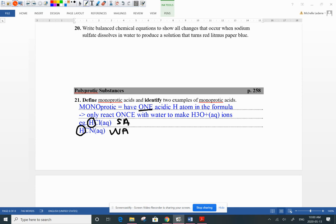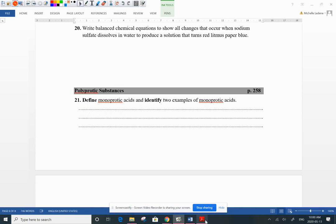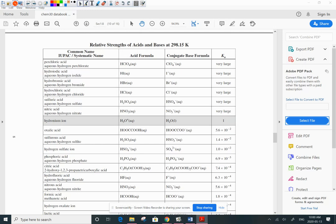So let's go to our data booklet and take a look and find some of these monoprotic acids. Okay, well, here we go. Right at the very top, perchloric acid, 1H reacts one time with water to produce hydronium. Oh, 1H, 1H. So is there some strong acids that have 1H? Yes, indeed.